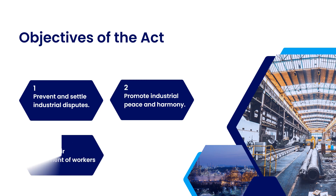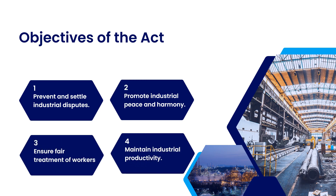Now let's look at the main objectives of the act. First, to prevent and settle industrial disputes effectively. Second, to promote industrial harmony by providing mechanisms for dispute resolution. Third, to ensure fair treatment of workers and safeguard their rights. Fourth, to maintain industrial productivity by preventing strikes and lockouts without proper procedure. In simple words, the act aims to ensure that conflicts don't disrupt business operations or negatively impact workers' rights.